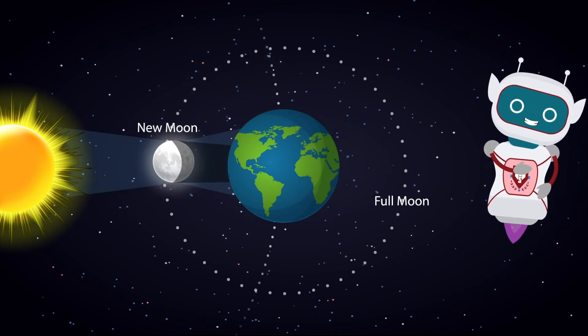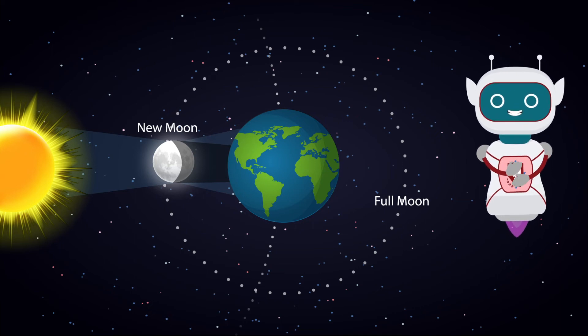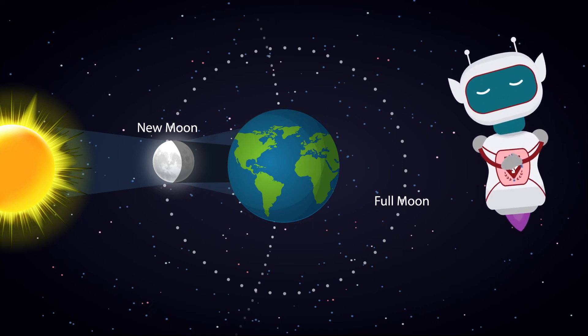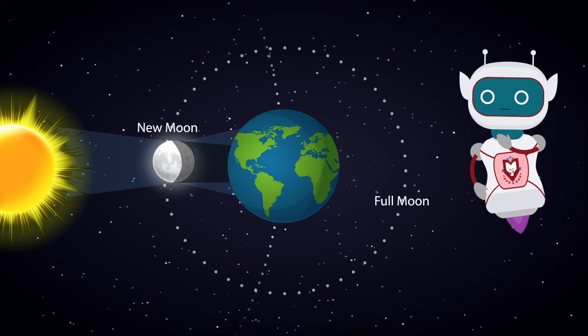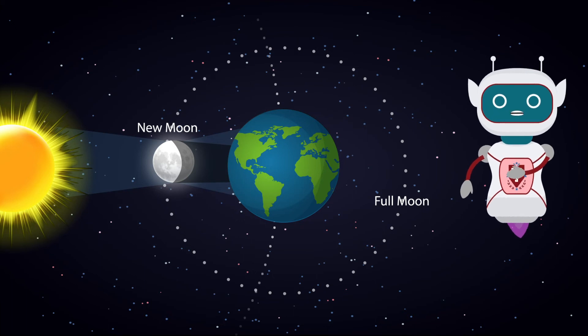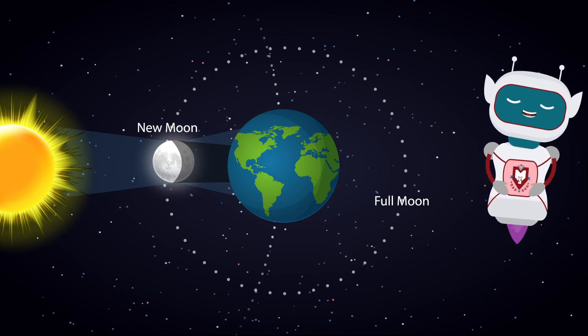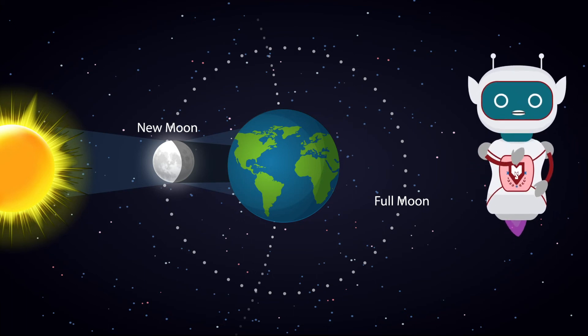But why doesn't an eclipse occur every new moon and full moon? It is because the Moon's orbit is tilted, so the Moon, Earth, and Sun are not always perfectly aligned.